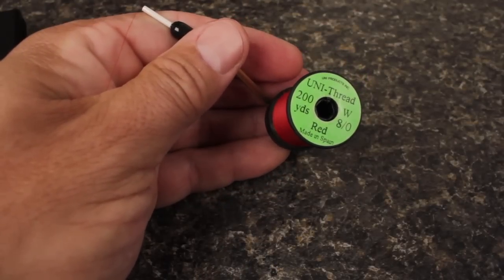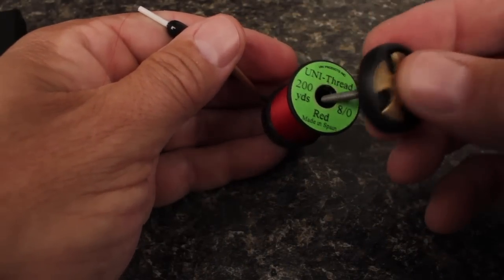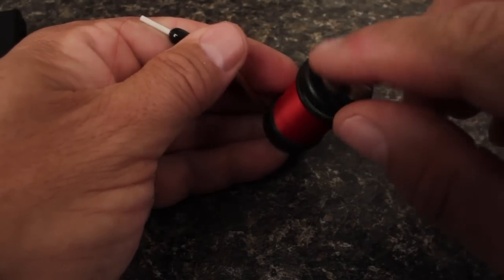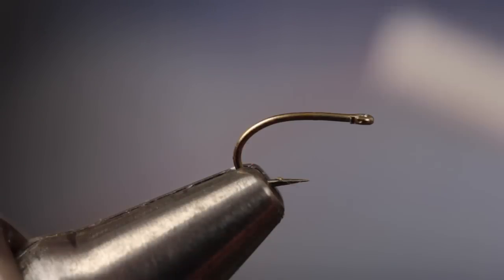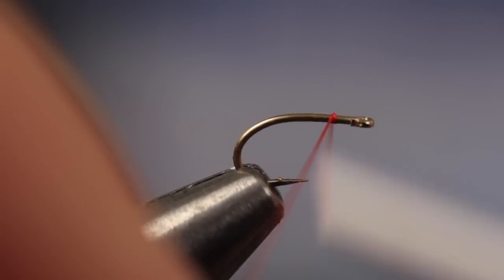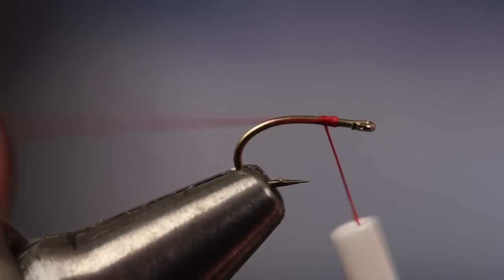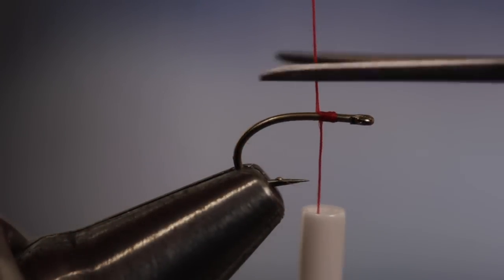For thread, I'm going to go with Unithread 8-0 in red. Start your thread on the hook shank, leaving a little space behind the eye, and then snip the tag off close.